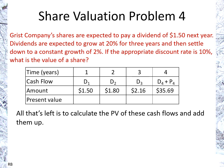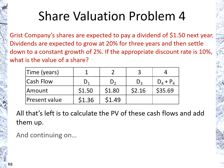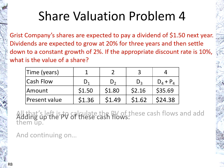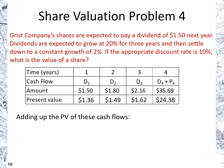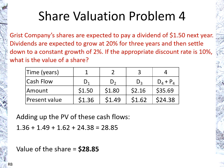We add all the present values of the four cash flows. So we have $1.50 over 1.1, plus $1.80 over 1.1 squared, plus $2.16 over 1.1 cubed, plus $35.69 over 1.1 to the fourth. Adding those present values together gives us a total of $28.85, and that is the value of the share.